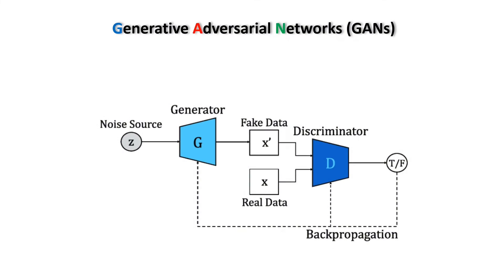Over the past few years, Generative Adversarial Networks or GANs have been the lead AI technology for image generation. These models use a generator, which is a trained deep learning model that accepts a random noise and generates a new image.